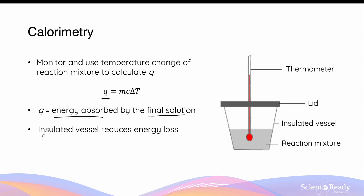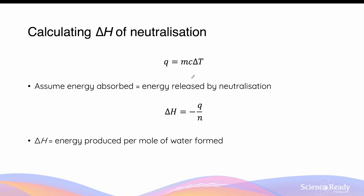In calorimetry, we use a specialized insulated vessel to contain the reaction mixture in order to reduce the amount of energy lost to the surroundings. This ensures that the temperature increase measured by the thermometer more accurately reflects the energy absorbed by the solution. The dependent variable in this experiment is the change in temperature, and by using the heat capacity and known mass of the final solution, we can find Q.